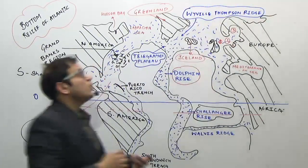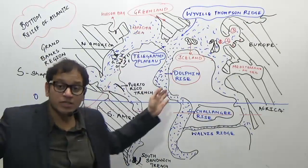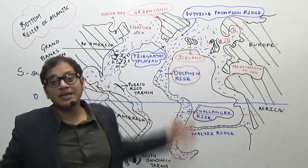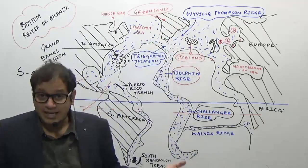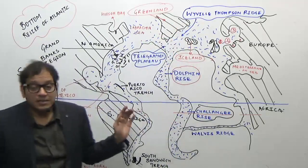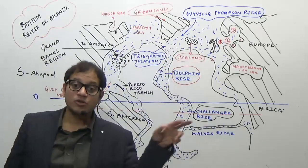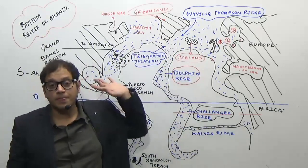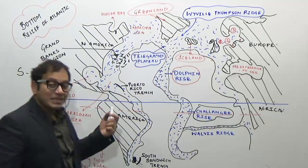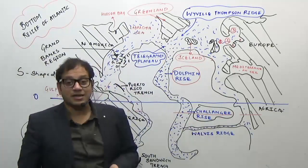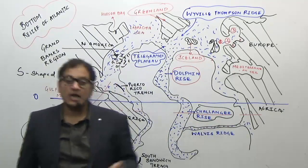So these are the North Atlantic ridges: the Dolphin Rise, with its spread-out extension as the Telegraphic Plateau, and extensions of the mid-Atlantic ridge as the islands of Greenland and Iceland — no doubt these are volcanic islands. The part of the mid-Atlantic ridge between these two islands is known as the Wyville-Thomson Ridge. Note that the Wyville-Thomson Ridge lies between Europe and America, or between Iceland and Greenland.